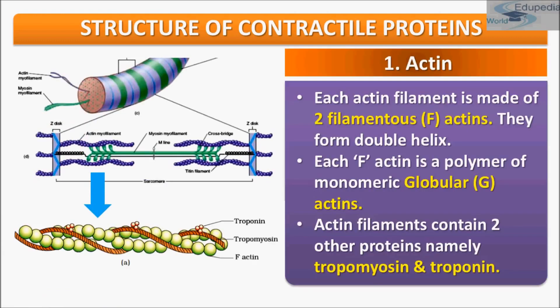First, we will be studying about the first protein, which is actin. Actin is a thin filament, and myosin is a thick filament. The actin filament is made up of two filamentous actins helically wound to each other. Each F-actin is a polymer of monomeric G-actin, that is globular actin.